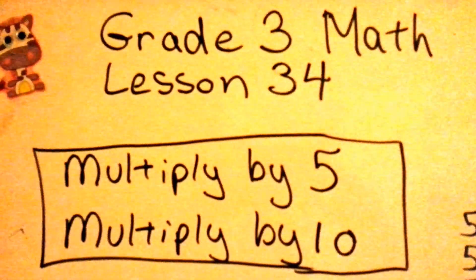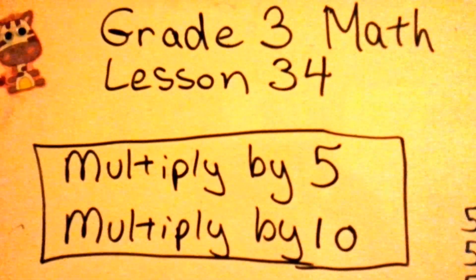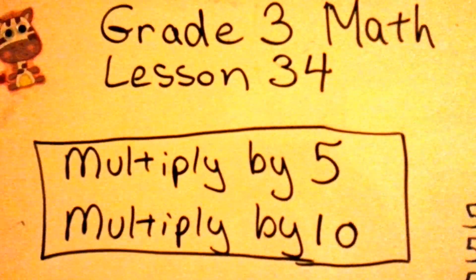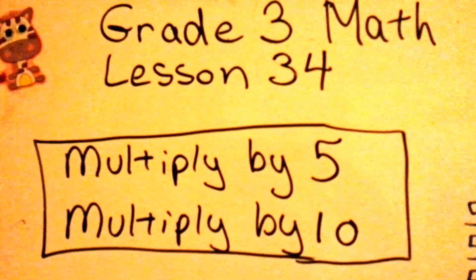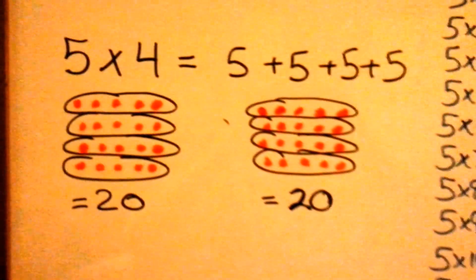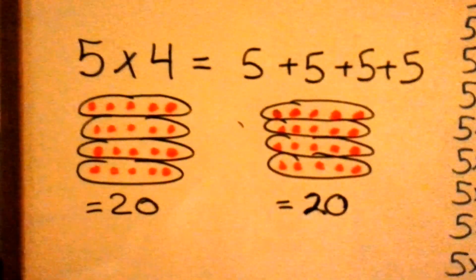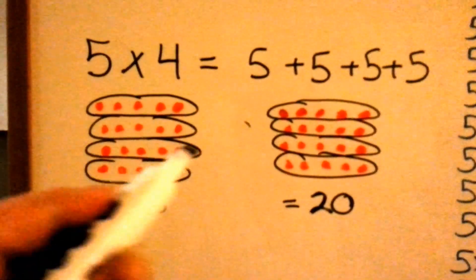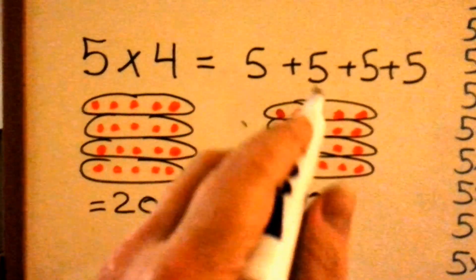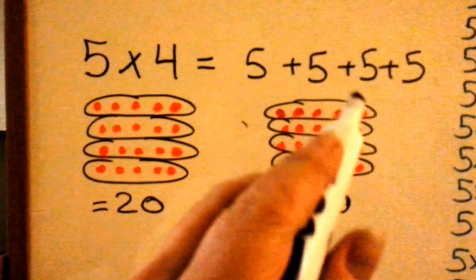Pre-Math Lesson 34: multiply by 5 and multiply by 10. When we multiply by 5, it's how many times you're adding a 5.